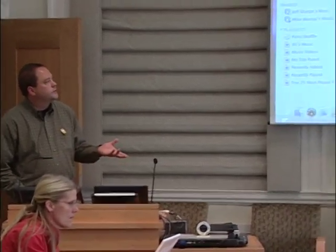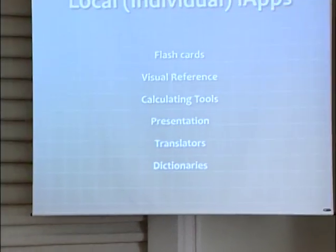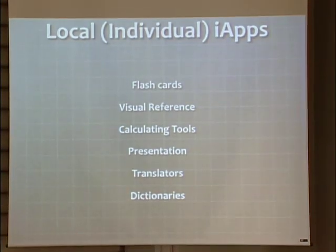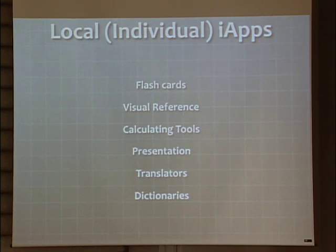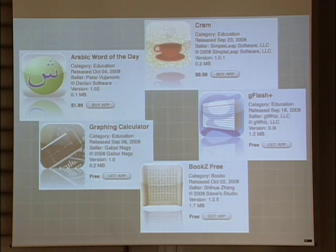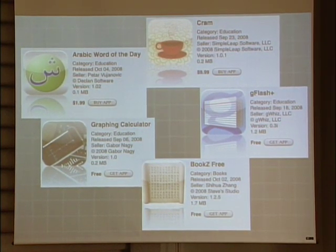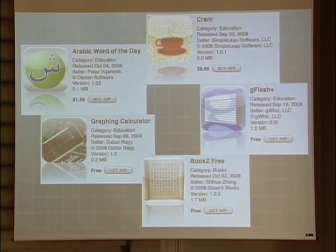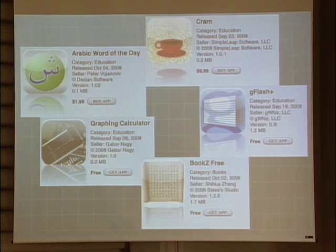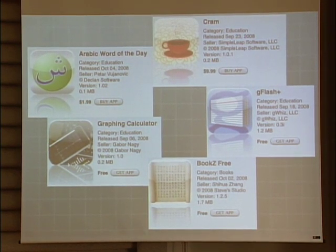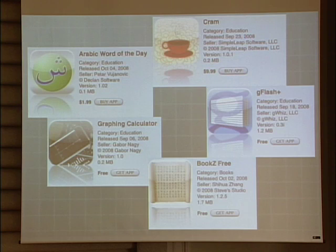The next level of applications are the local ones — downloadable apps, some free, some that cost money. To be fair, a lot of what you can download right away is more K-through-12 oriented. The ones that caught my eye for college students include a free graphing calculator, flashcards useful across any discipline, BookZ Free which lets you scroll through and read certain books, and Cram, which lets you create tests yourself and push them down to students.